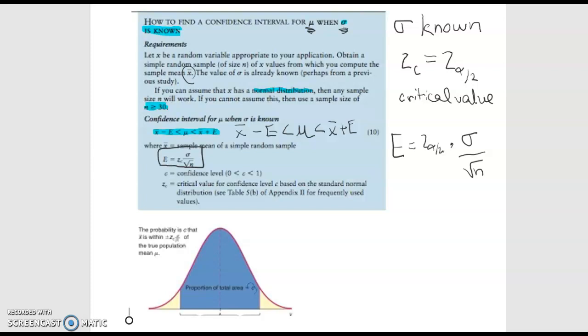And you can see here below that it says the probability is C that x bar is within this range of error of the true population mean mu. So that's just a graphic representation of what our confidence interval of the mean is telling us.